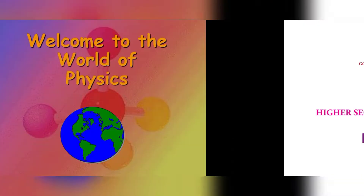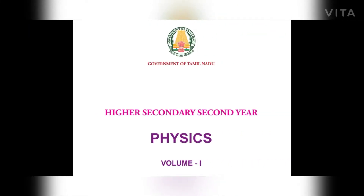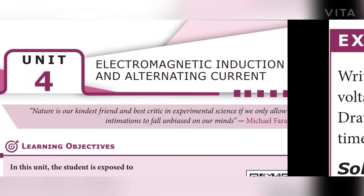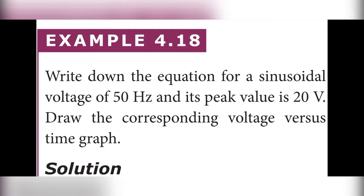Hello students, welcome to this video. Higher Second Year Physics, Volume 1, Unit 4: Electromagnetic Induction and Alternating Current. In this video, we are going to discuss two example sums, 4.18 and 4.19.